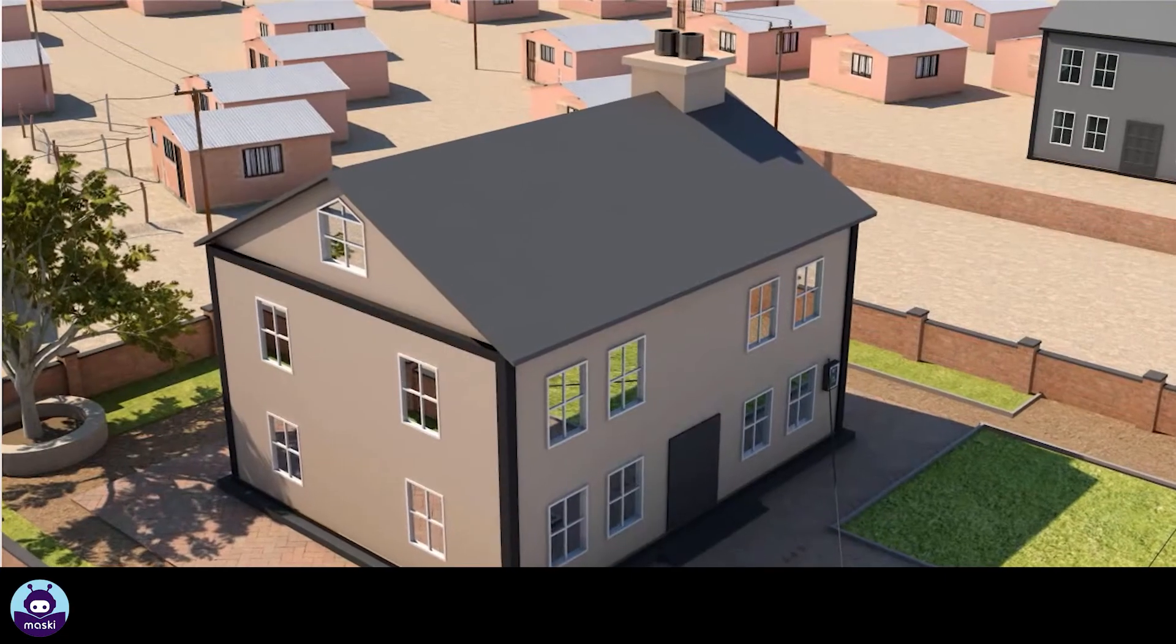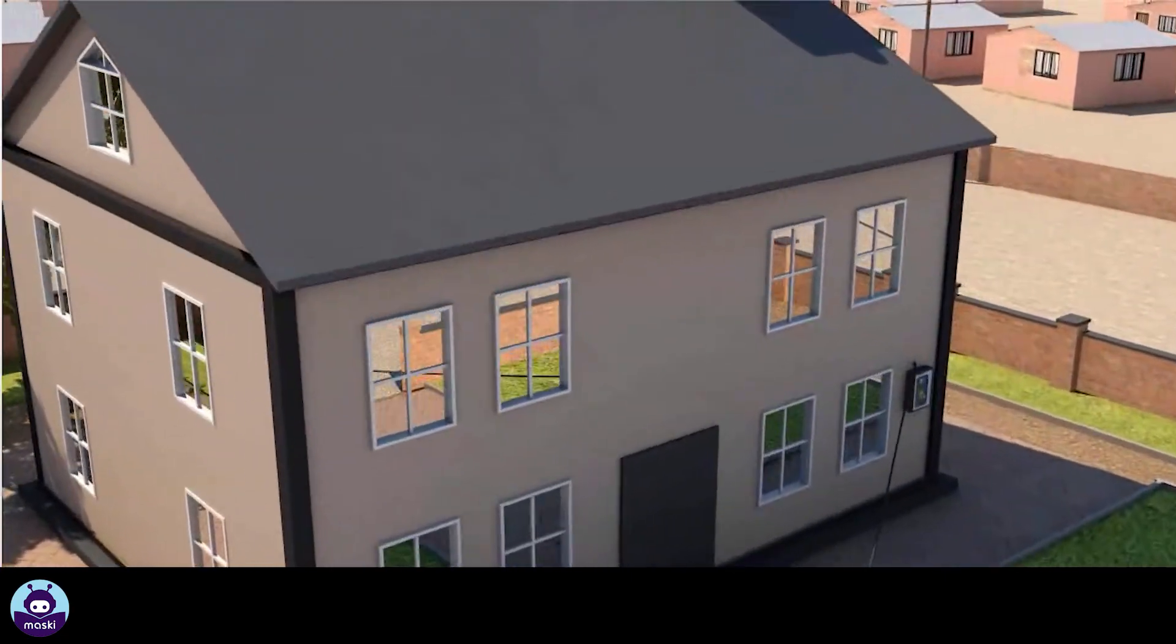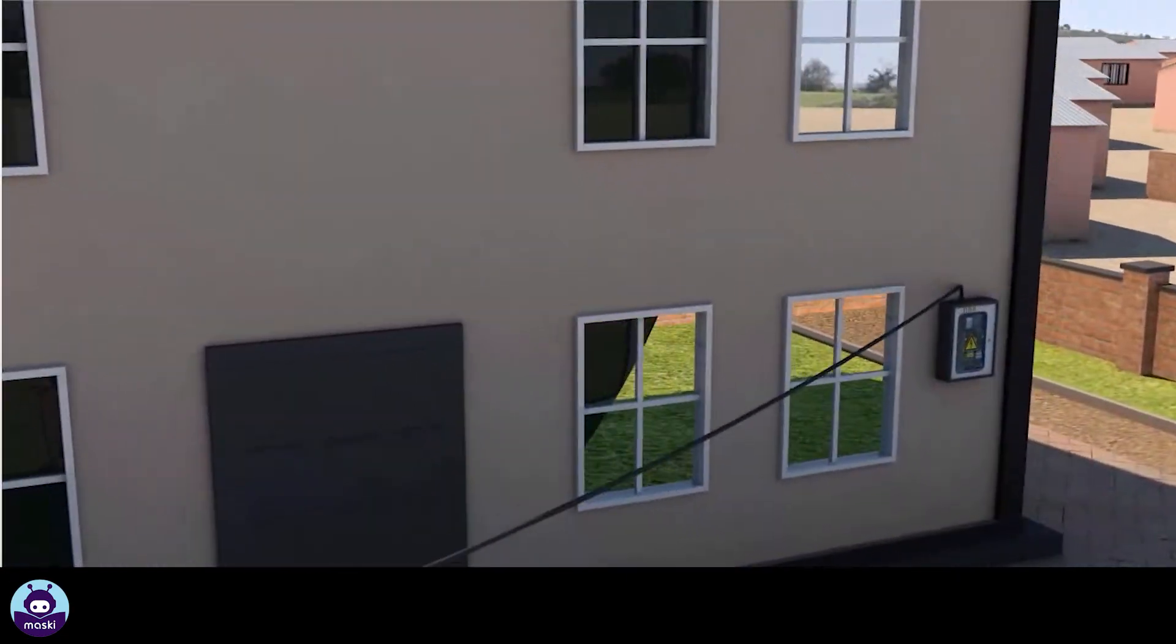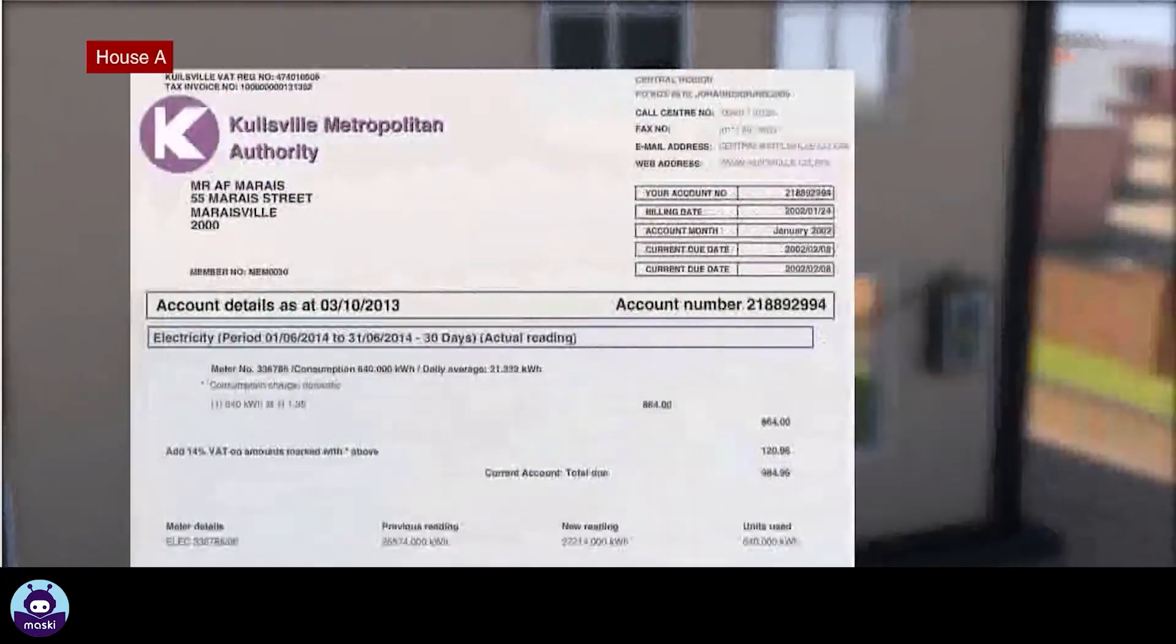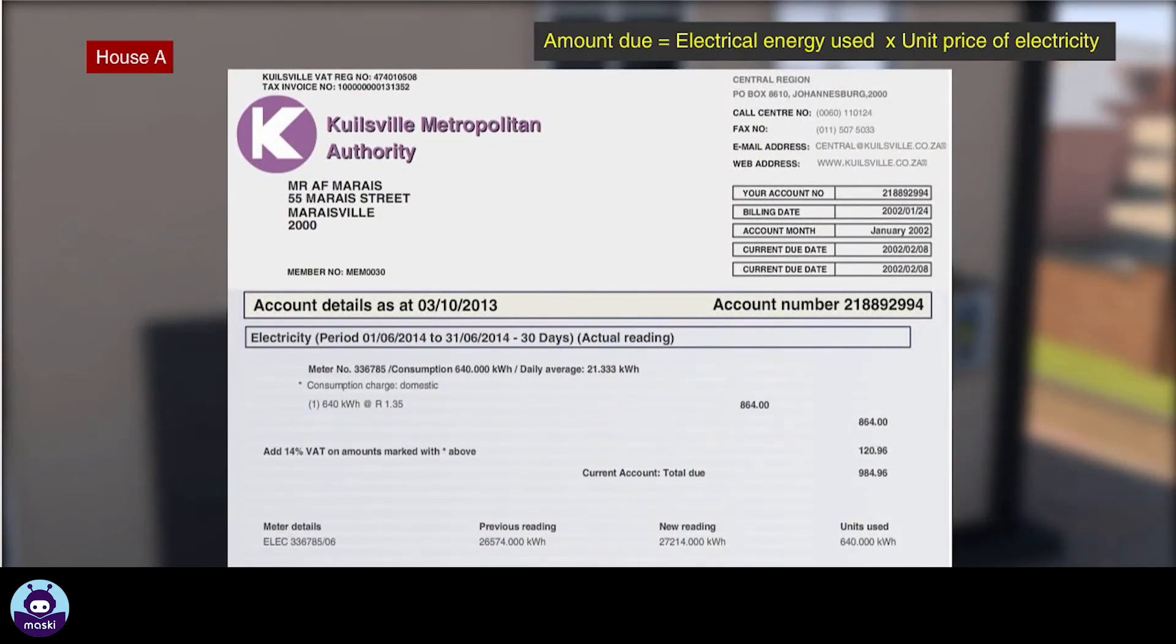Let's take a closer look at the monthly utility bill of a house called House A. The amount due is obtained by multiplying the quantity of electrical energy used (the consumption measured in kilowatt hour) by the unit price of electricity.